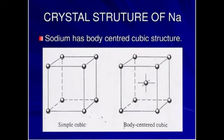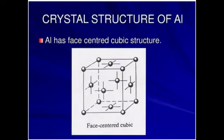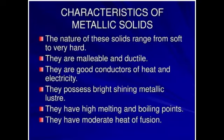You can again see the crystal structures. Here is the crystal structure of aluminum. The nature of metallic solids — which are essentially metals — ranges from soft to very hard. Their softness or hardness depends upon the strength of the metallic bond found within them.